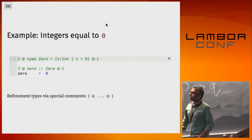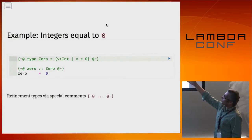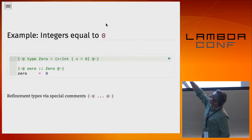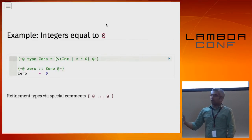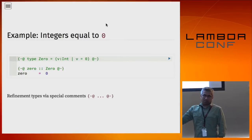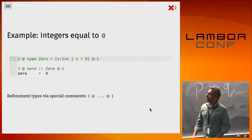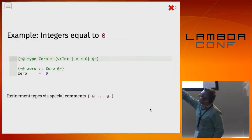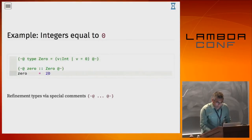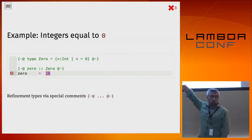If you push play, it grinds along and says yes, 0 is of type Zero. If I replace 0 with 20, it would say certainly not — 20 does not satisfy the predicate 'value equals 0'. Also note that I'm writing refinements in Haskell comments. This is a design decision: we intend this to be an optional type system, so if you're not using our stuff, it's just plain old Haskell code. Everything LiquidHaskell looks at is in comments.